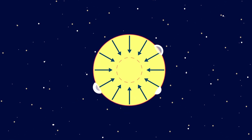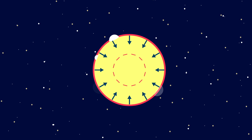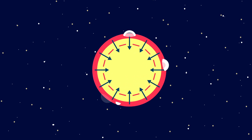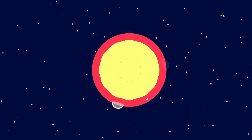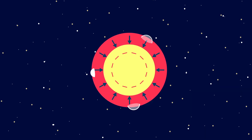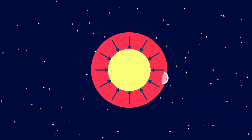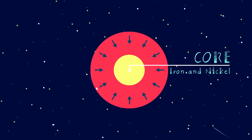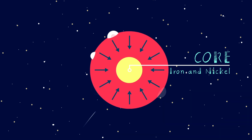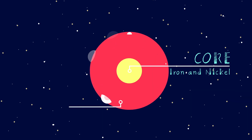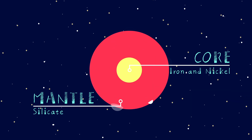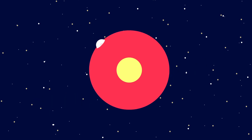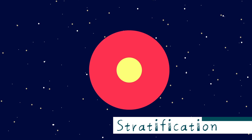Due to the Earth's gravity and variations in the density of its magma, heavier substances collected at the center of the Earth, and lighter substances were pushed outward. At the center, a heavy core of iron and nickel was formed, while the outer crust was made up of lighter silicates, made up of silicon and oxygen. This division of the mantle from the crust is called stratification.